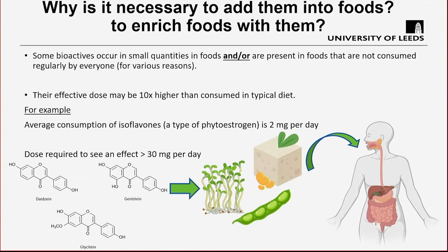Another important application is the use of byproducts and agri-food waste to extract bioactive compounds — for example, oil seeds after fat extraction can be used to extract polyphenols or produce interesting protein ingredients. When discussing plant food bioactives, we need to consider many challenges and barriers. The first is the complexity of digestion of plant foods — we have inter-individual variations in the metagenome, which differ depending on ethnicity and populations studied.